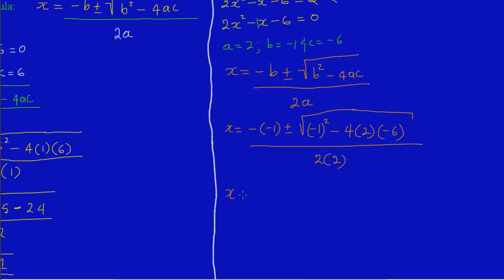From here on in, we're going to say: negative 1 in front of this bracket means we want the opposite of what's inside. What is inside is negative 1, so we get a positive 1, plus or minus the square root. Negative 1 squared is negative 1 times negative 1, which gives us positive 1. Negative 4 times positive 2 gives us negative 8, and negative 8 times negative 6 — a negative times a negative gives us a positive — so 8 times 6 is 48.